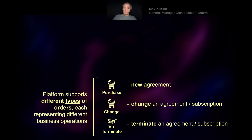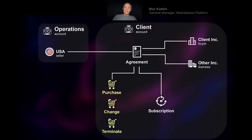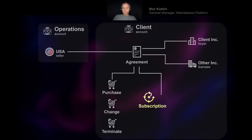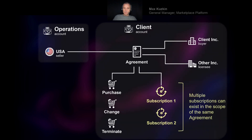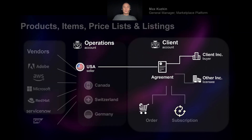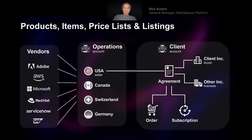On the other side of this diagram we have subscriptions. A subscription in our platform is an object representing the provision of a service over a period of time. There can be multiple subscriptions within the same agreement. The only way subscriptions are modified is through orders — whether a purchase order, change order, or termination order — and as a result of processing that order, subscriptions are created, terminated, or modified.